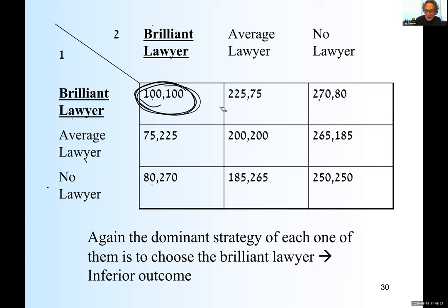The dominant strategy of each one of them is to choose the brilliant lawyer, and therefore you get an inferior outcome. An inferior outcome means there exist other outcomes that are strictly better for both of them — like 250/250, 200/200, or 265/185. That's the point.